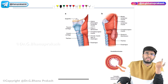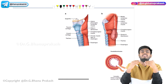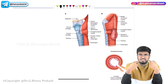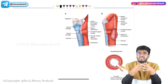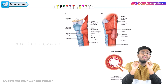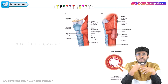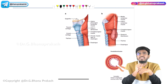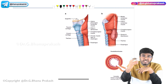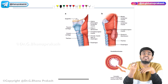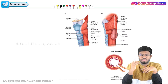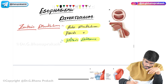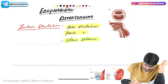Superiorly there is the thyropharyngeus and inferiorly there is the cricopharyngeus. These are the inferior constrictor muscles. There is a weak point between these two inferior pharyngeal constrictor muscles — that area is called Killian's dehiscence, through which the pharyngeal pouch, the Zenker's diverticulum, is arising. This pouch is originating from the pharyngeal region, so Zenker's diverticulum is also called the pharyngeal pouch.